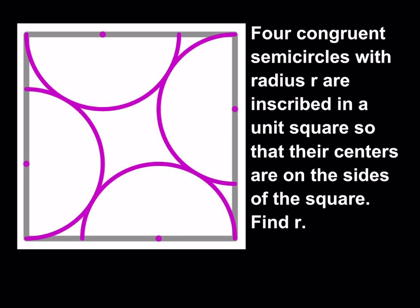We have four congruent semicircles with radius r that are inscribed in a unit square so that the centers of the semicircles are on the sides of the square and we're supposed to find the radius.